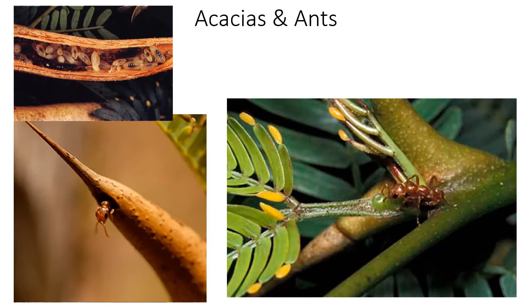This is part three of the lecture on symbiosis. We're moving into relationships that are less clear-cut. The ones we looked at before were primarily mutualistic, with parasitism and commensalism involved, but mostly mutualisms. Now we're going to look at mutualisms that are more parasite-like, and then some straight parasitism. The most commonly referenced commensalism involves a sea cucumber with a fish living inside of it — worth looking up.